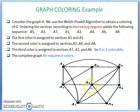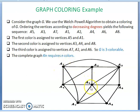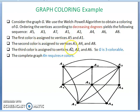Assign the first color (red) to A5, the highest-degree vertex. The adjacent vertices of A5 are A2, A3, A4, A6, A7, A8 — all are adjacent. The only non-adjacent vertex is A1, so A1 also gets the red color. Thus A1 and A5 both have the first color, red.